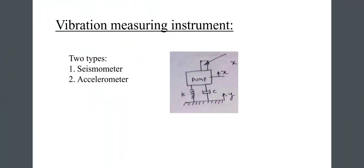Next, vibration measuring instruments. There are mainly two types: the first is the seismometer and the second is the accelerometer. The figure shows the instrument with seismic mass, and the parameters x, y, k, and c.